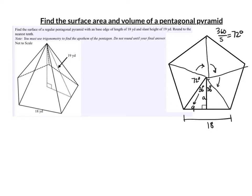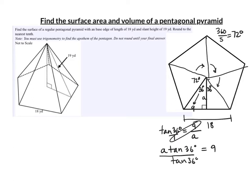At 36 degrees, nine is the opposite and A is the adjacent. Opposite over adjacent is tangent, so the tangent of 36 degrees equals nine over A. Cross-multiplying gives A times the tangent of 36 degrees equals nine. Dividing both sides by the tangent of 36, we leave this as nine over the tangent of 36 degrees — do not round until the final answer.